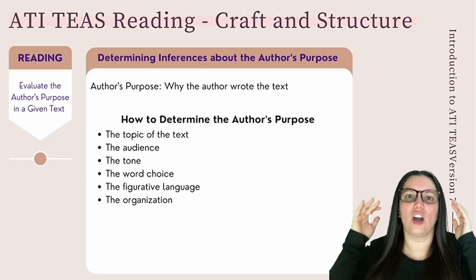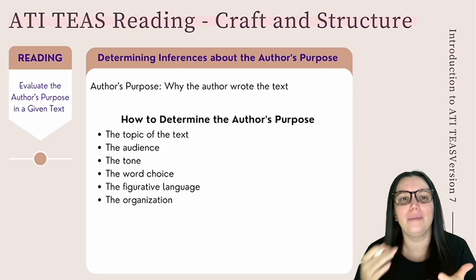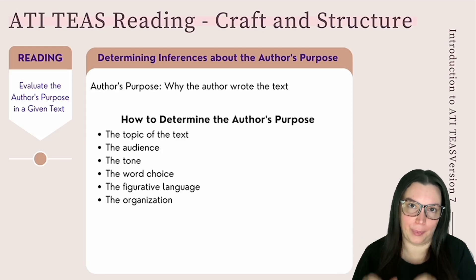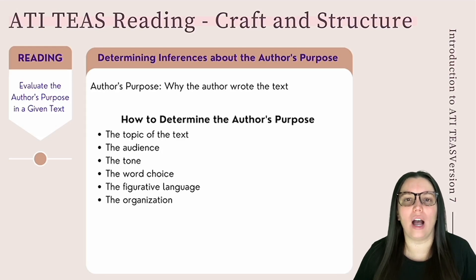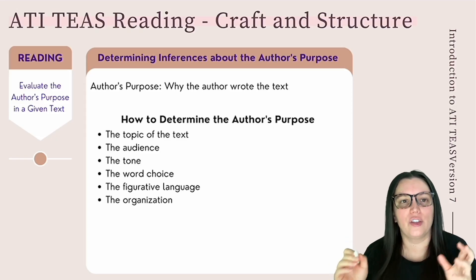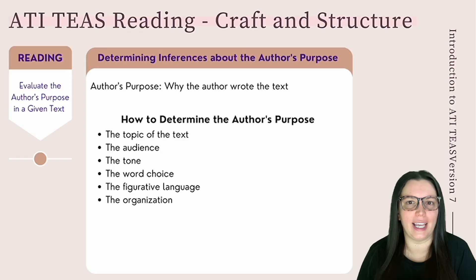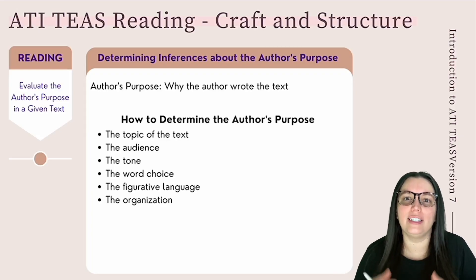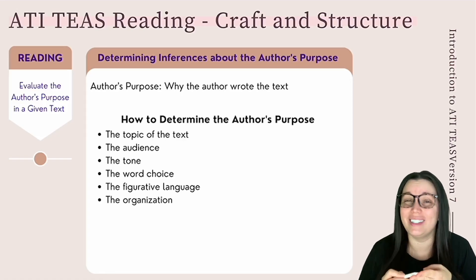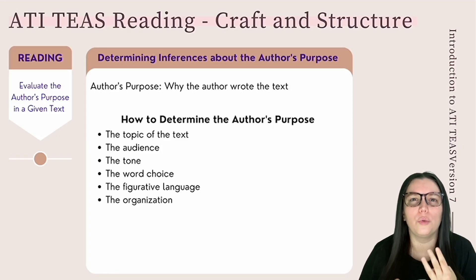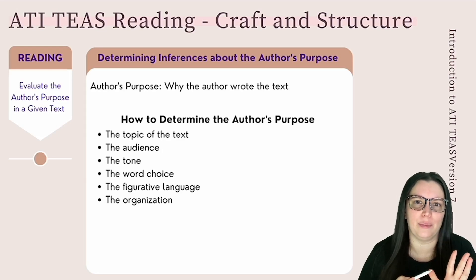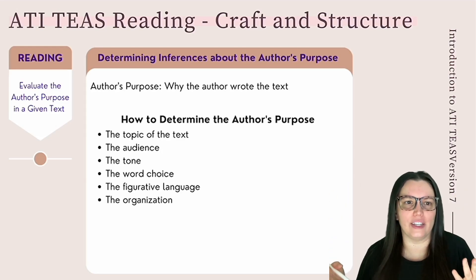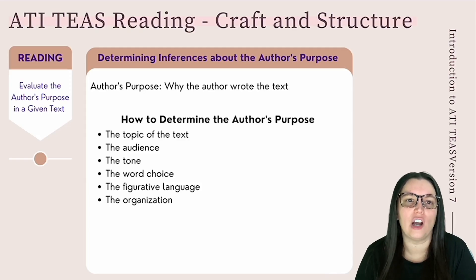Moving on to the next main topic: evaluating the author's purpose in a given text. The author's purpose is the reason why the author is writing a particular text — it can be to inform, entertain, describe, explain, or persuade. To determine the author's purpose, look at the text as a whole and consider: What is the topic? Who is the audience? What's the overall tone? What word choices are being used? Is there figurative language? And what is the overall organization?